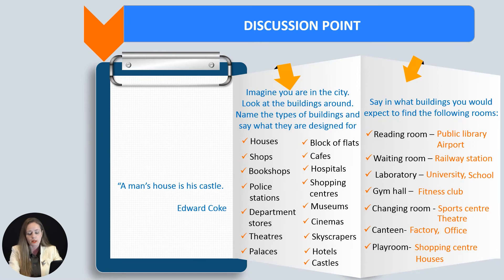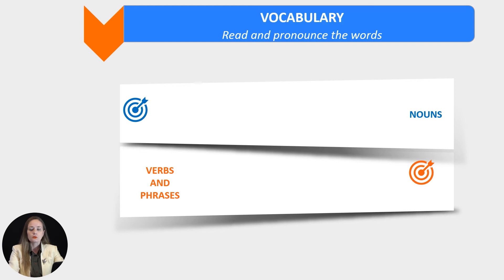No matter the type of house we live in — whether it is a block of flats, an igloo, or a floating house — the most important thing is to feel safe and good. Now we will work with the vocabulary. When we speak about houses, we distinguish clay houses. A clay house is produced using wet clay bricks which are shaped and dried in order to harden. Clay is a kind of earth that is soft when wet and hard when dry.